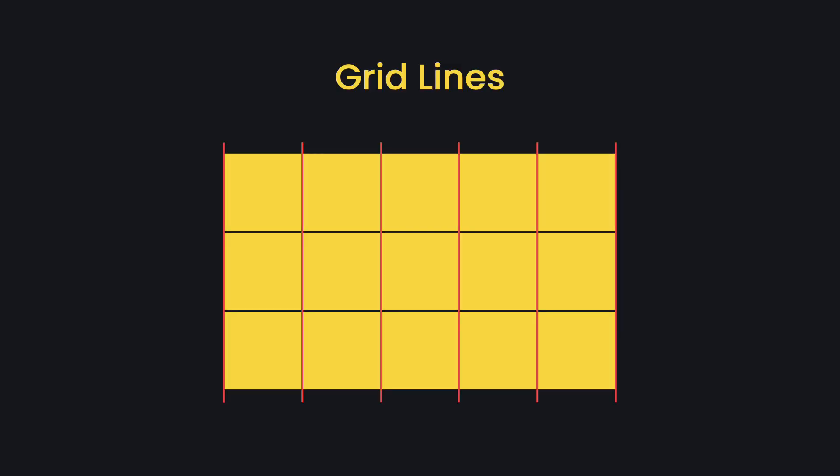Grid lines are the vertical and horizontal lines that divide the grid into columns and rows and are used to determine the position of the grid items. They can be referenced by a numerical index starting at 1. A negative numerical index can also be used to reference the grid from the opposite end.